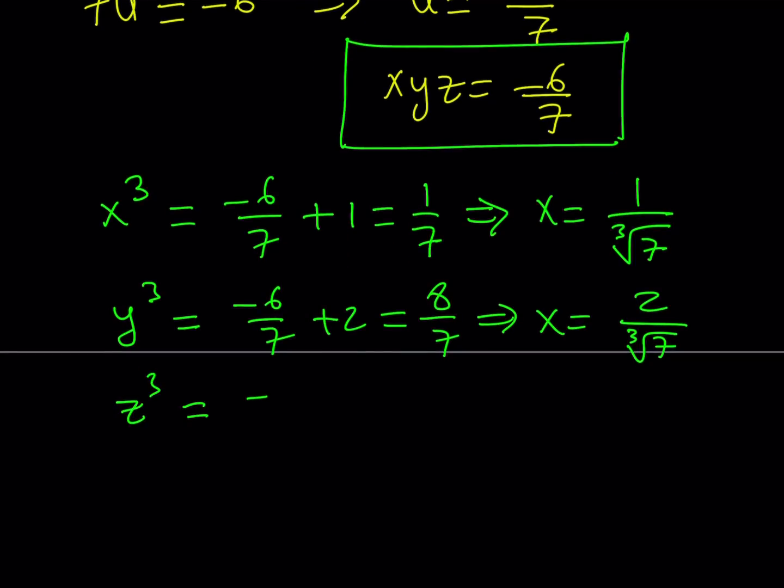For z, it's similar but with a minus sign. That gives negative 21, so negative 6 minus 21 is negative 27 over 7, which is a perfect cube. This gives negative 3 over cube root of 7. So this gives us x, y, and z values. That's what we were trying to find, right? We found the x, y, z values.